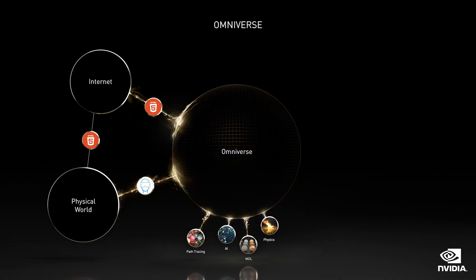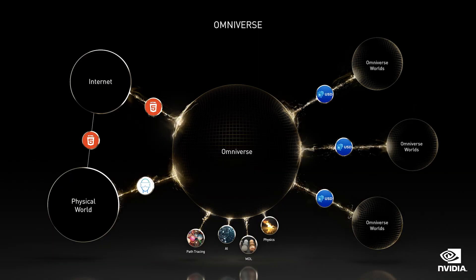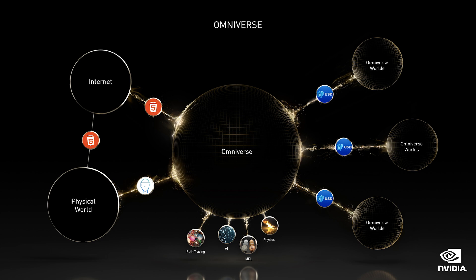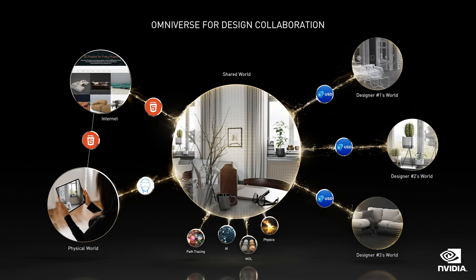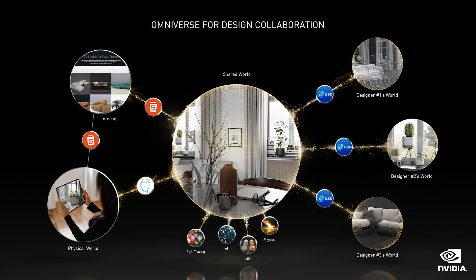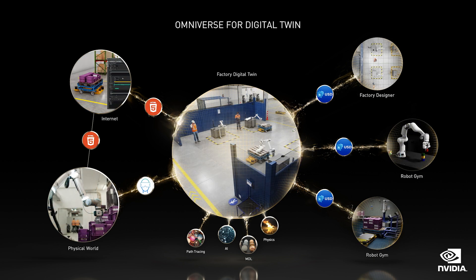Omniverse is very different than a game engine. Omniverse is designed to be data center scale, and hopefully someday planetary scale. The portal of Omniverse is USD, Universal Scene Description — essentially a digital wormhole that connects people and computers to Omniverse, and for one Omniverse world to connect to another. USD is to Omniverse what HTML is to websites.